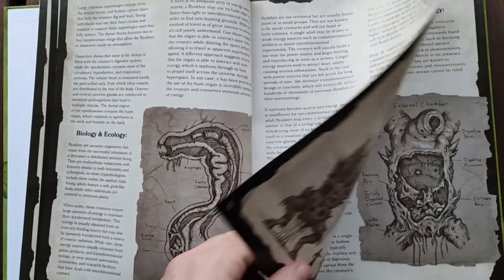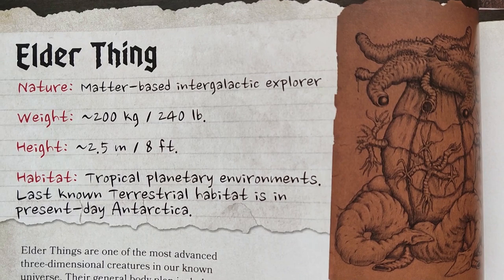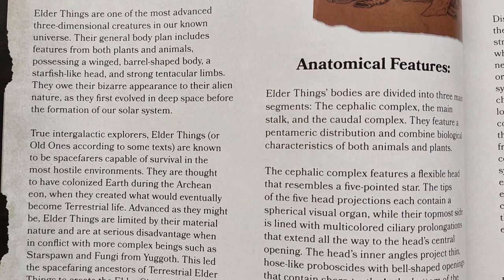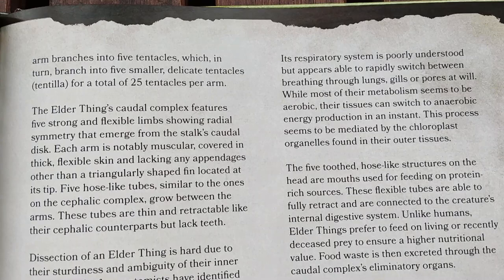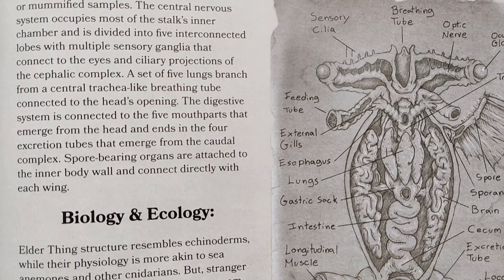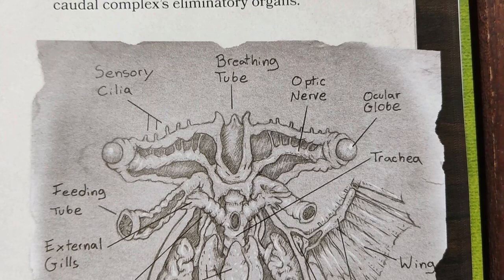All entries are treated the same, so I can use one as an example to show how every creature is presented. Let's look at an Elder Thing. The physical dimensions are presented with height and weight, along with its nature and habitat. There is also a size comparison next to an average male human being. Further, there is an anatomical sketch — a visual dissection of the Elder Thing — and the creator highlights unique features, such as how an Elder Thing could fly. Regarding text, you can see the anatomical features, biology, ecology, development, and some explorer's notes on the creature.